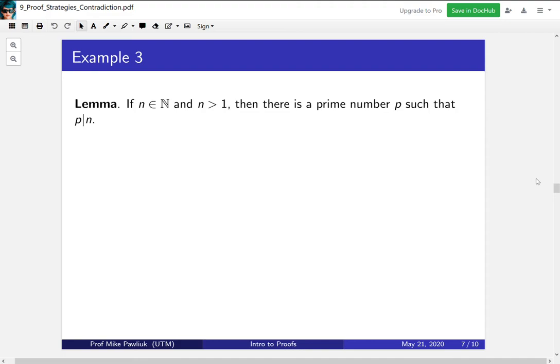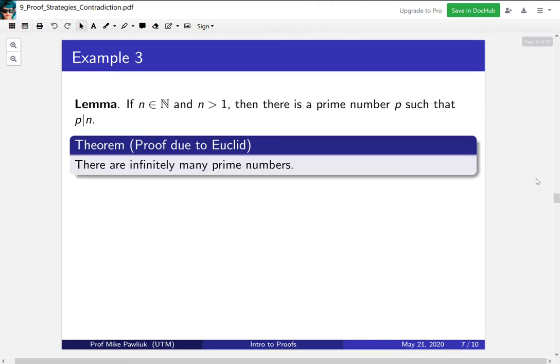So this lemma says that if you have a natural number that's bigger than one, then there's a prime number that divides it. Right? Either the number is prime itself or there's a smaller prime that divides it.